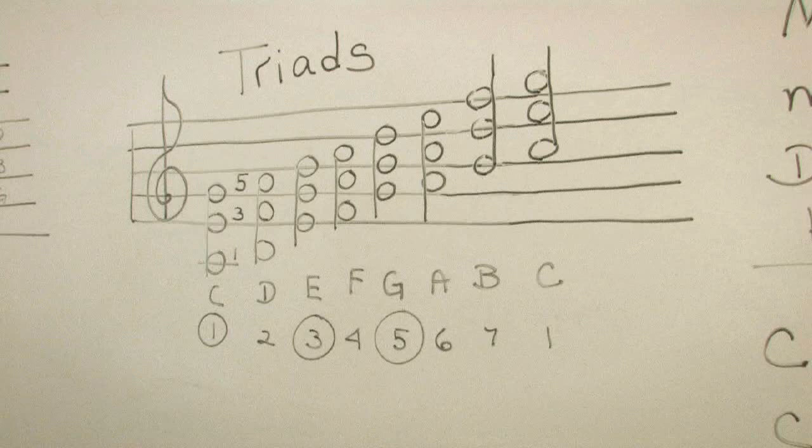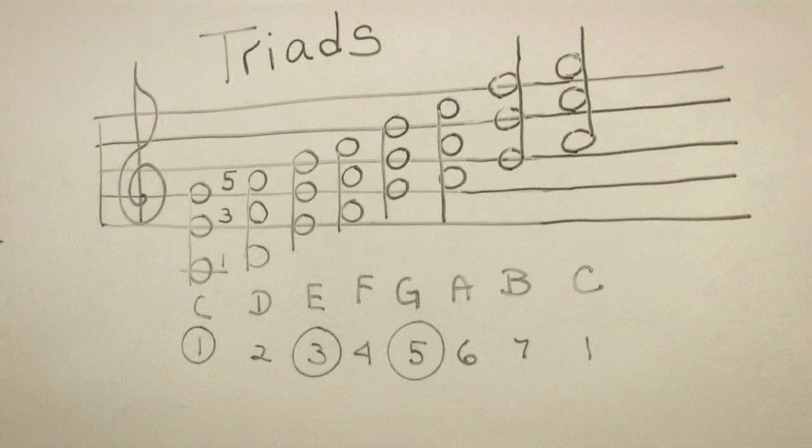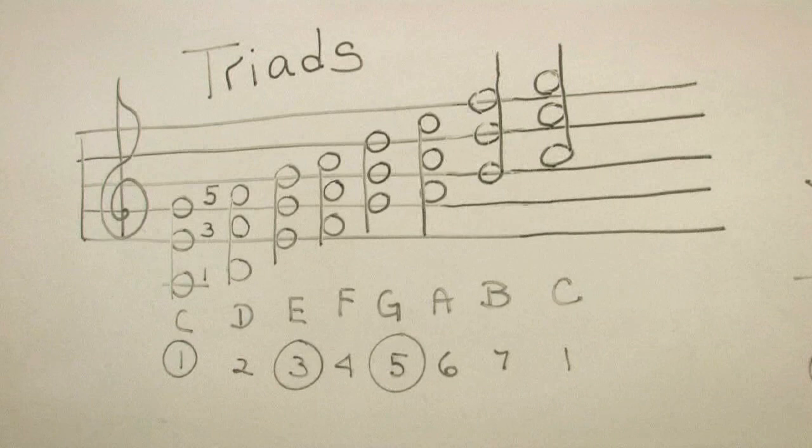If I wanted to spell a D triad in the key of C, I would spell it D, F, and A. So triads are always three notes and they're every other note in any scale.